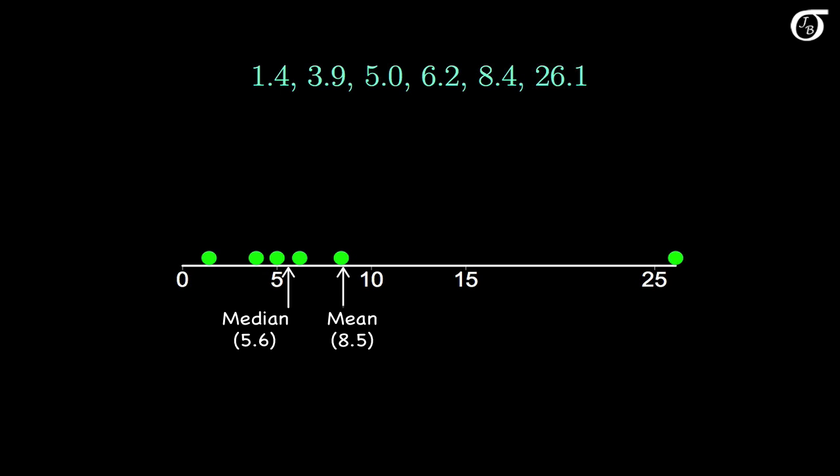Increasing the largest value to 26.1 from 14.1 has greatly increased the mean, which is now 8.5. The mean has increased 2 units, but the median hasn't changed at all. Extreme values have much more of an effect on the mean than the median.